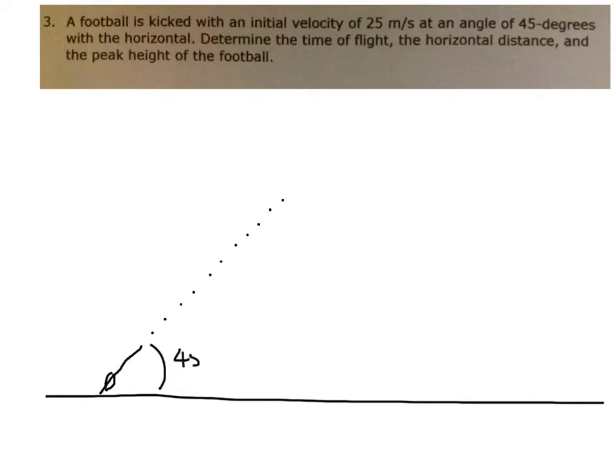This is 45 degrees and it gives you what that initial velocity is - it says it's 25 meters per second. You must presume that the velocity is at the angle that it tells you with the horizon, so the football takes off at this angle and it's asking you to determine time of flight, the horizontal distance, and the peak height of the football.